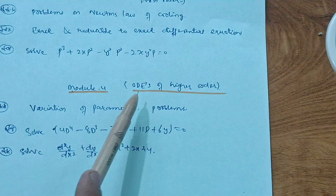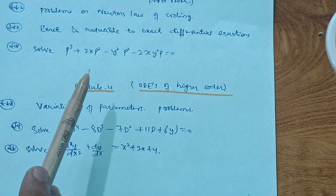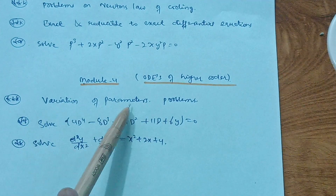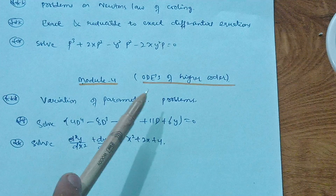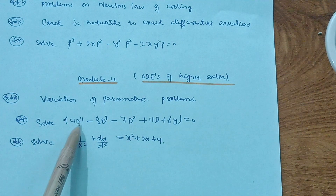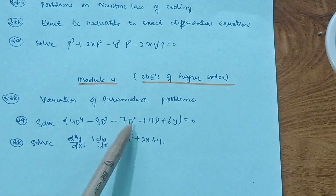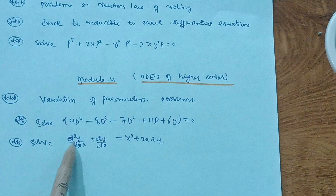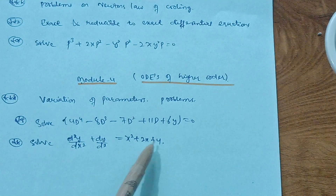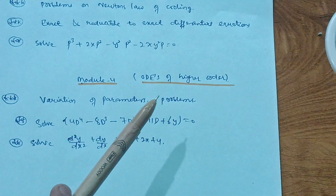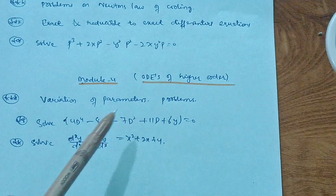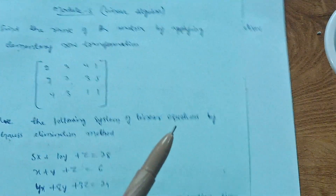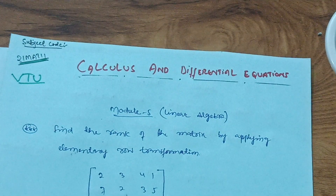Module 4 covers Ordinary Differential Equations of Higher Order — with powers of two, three, four and above. First, focus on variation of parameters — try two to three problems. Also practice problems like: solve (D⁴ − 8D³ − 7D² + 11D + 6)y = 0, and solve d²y/dx² + dy/dx = x² + 2x + 4. If you are good at differentiation and calculus, these are manageable. This content is enough to pass 21MAT11 as a backlog student. Thank you for watching.